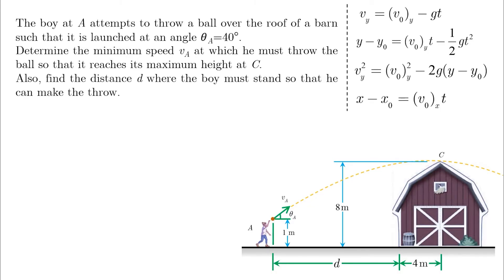The boy at A attempts to throw a ball over the roof of a barn, such that it is launched at an angle theta equals 40 degrees. Determine the minimum speed VA at which he must throw the ball so that it reaches its maximum height at C. Also, find the distance D where the boy must stand so that he can make the throw.